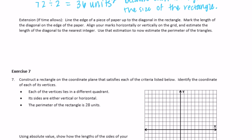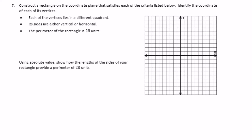I'm going to skip the extension. Question 7: construct a rectangle on the coordinate plane that satisfies each of the criteria listed below. Identify the coordinates of each vertex. Each vertex lies in a different quadrant. So we need one vertex in each quadrant. Its sides are either vertical or horizontal — no diagonal sides. And the perimeter is 28. So I need to find numbers that add up to 28.